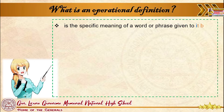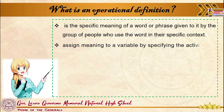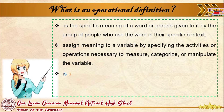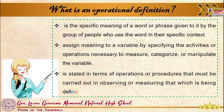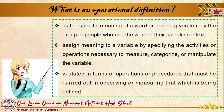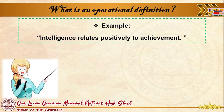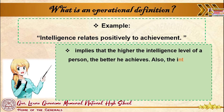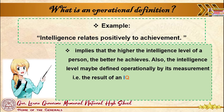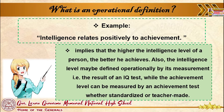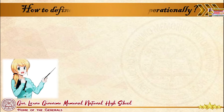What is an operational definition? It is the specific meaning of a word or phrase given to it by the group of people who use the word in their specific context. It assigns meaning to a variable by specifying the activities or operations necessary to measure, categorize, or manipulate the variable, and it is stated in terms of operations or procedures that must be carried out in observing or measuring what is being defined. For example: 'intelligence relates positively to achievement' implies that the higher the intelligence level of a person, the better he achieves. The intelligence level may be defined operationally by its measurement — for example, the result of an IQ test — while achievement level can be measured by an achievement test, whether standardized or teacher-made.